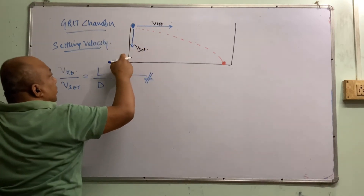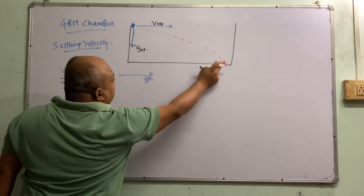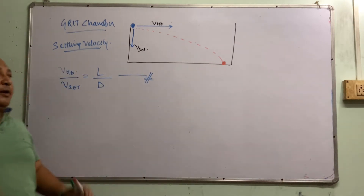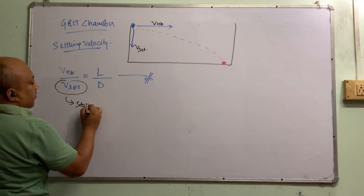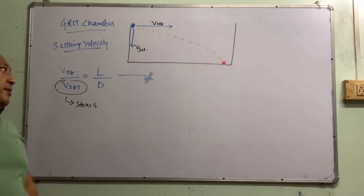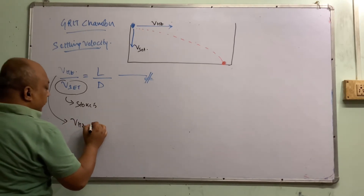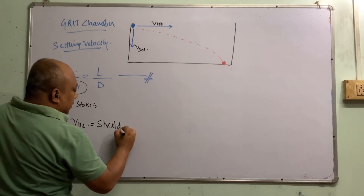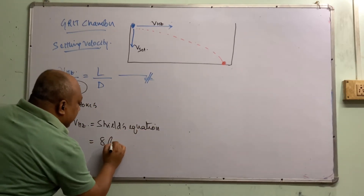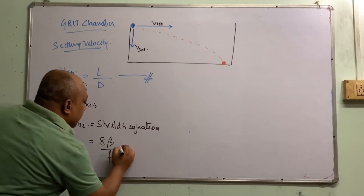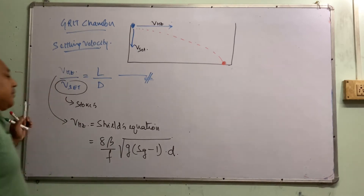When length by depth equals horizontal velocity by settling velocity, the particle with this settling velocity will be settled at an optimal length from the beginning — that is what we expect. This settling velocity can be found using Stokes law or using terminal velocity equations. But what about horizontal velocity? V_horizontal is estimated using an equation called Silt's equation: β/F × √(g × (specific gravity − 1) × D).